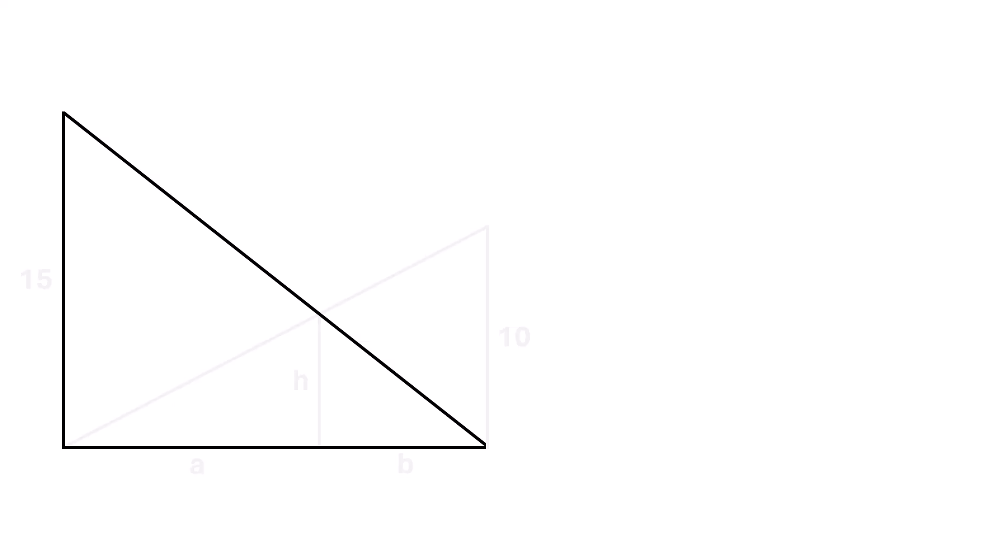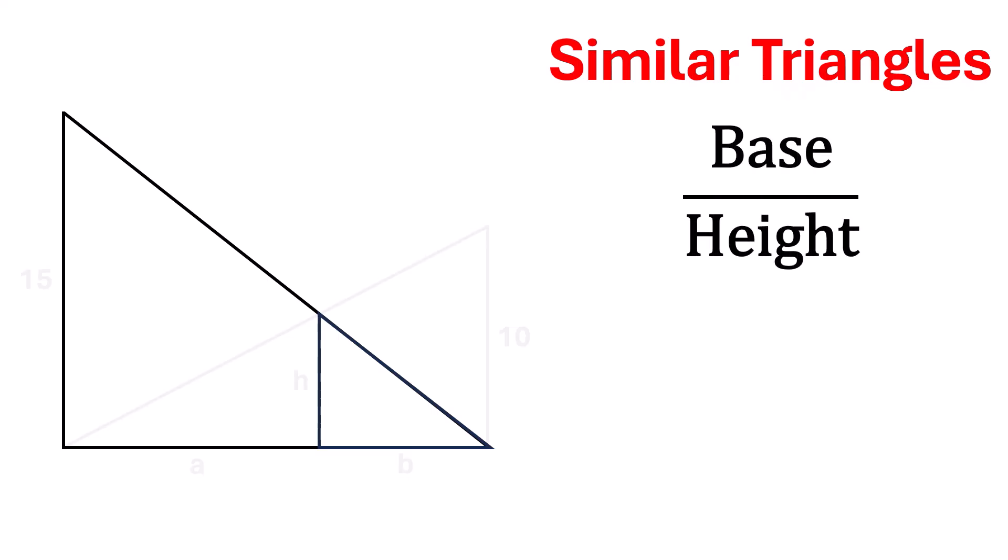Now, look at this larger triangle and the smaller one. Both triangles share this angle, and both are right-angled triangles. So, by the angle-angle similarity criterion, these two triangles are similar. That means the ratio of base to height in both triangles will be equal.